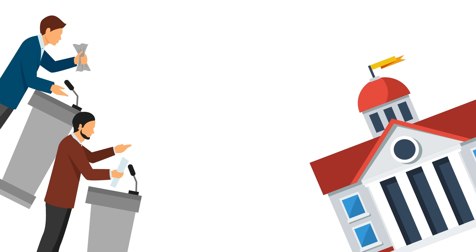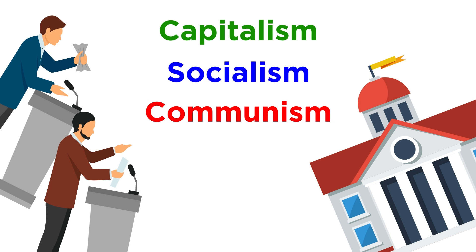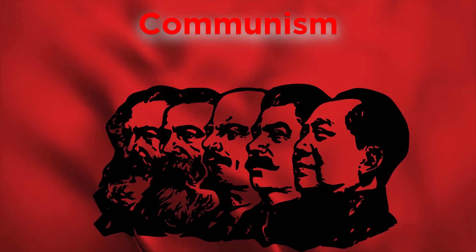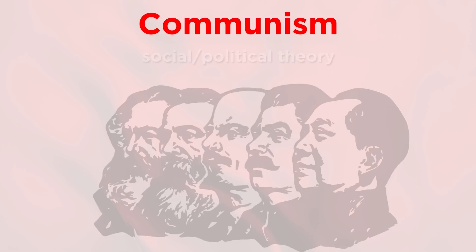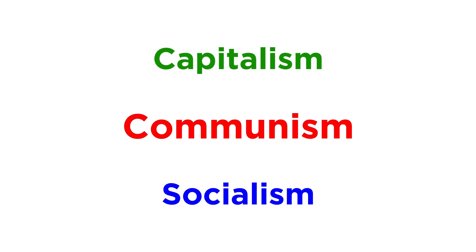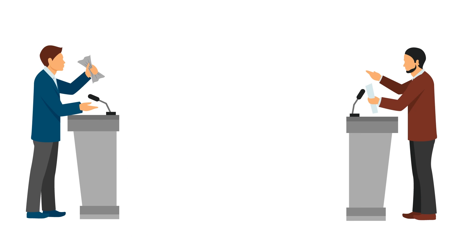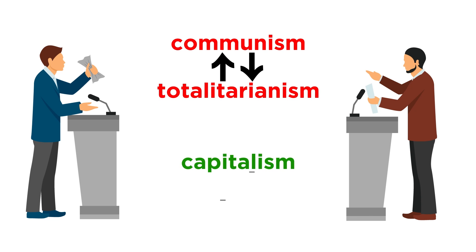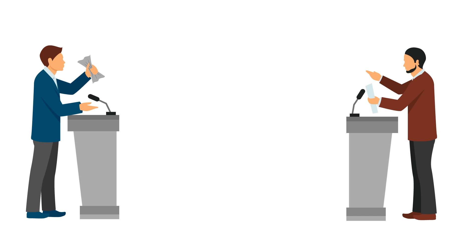Politicians and government officials often use words like capitalism, socialism, and communism when discussing economic systems, but those three words have different definitions to different people. In particular, communism is also a social and political theory, making it even more confusing when definitions are mixed up. Because these words are often weaponized and used to attack and marginalize others, even economists can be guilty of misusing them — for example, people often interchange communism and totalitarianism, or capitalism and fascism, as if they mean the same thing. For this reason, in this series, we will not be using the terms capitalism, socialism, or communism to characterize economic systems.